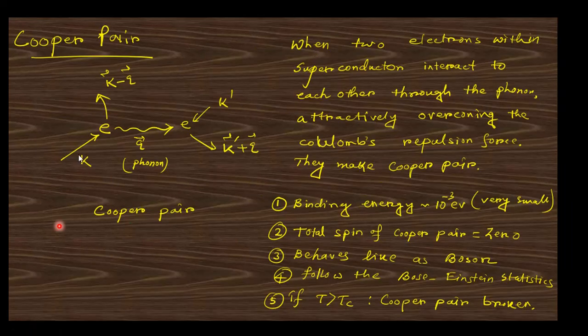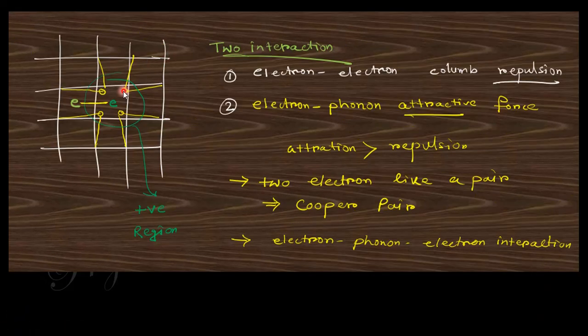Since these two electrons are trapped here, this is a Cooper pair. So electron-phonon interaction is happening here because this region is positive, as all the positive charges are attracted here. So this is a positive region. This electron is also attracted here, so these two electrons form a pair. That is called a Cooper pair.